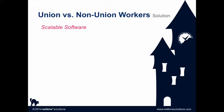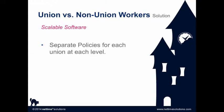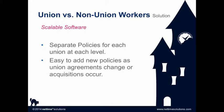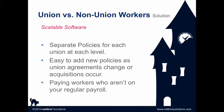What do you need to handle the intricacies of those CBAs? First, separate policies need to be available for each union at each level. It's important that your software can accommodate an unlimited number of policies so you can make adjustments as needed. Second, you need the ability to add new policies as union agreements change or as business acquisitions occur. Finally, you may need to contact a union to send over workers for a specific job, and you need to be able to pay those employees appropriately and quickly add them, even though they aren't part of your regular payroll.